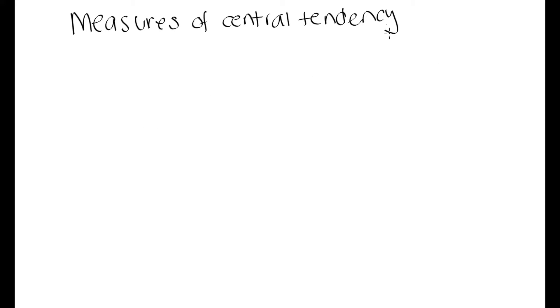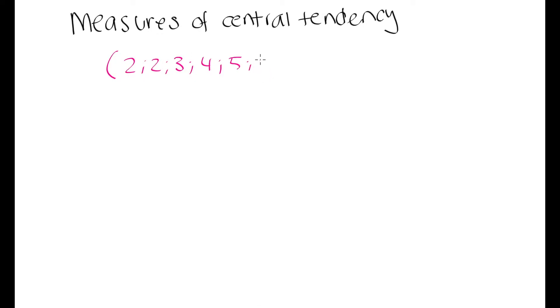In this lesson we're going to go over measures of central tendency — what that means is how we are going to denote the middle of a data set, or the center of a set of data. Let's say we have the following data set: 2, 2, 3, 4, 5, 5, 6, and 15. We are trying to figure out different ways that we can describe the center of this data set.